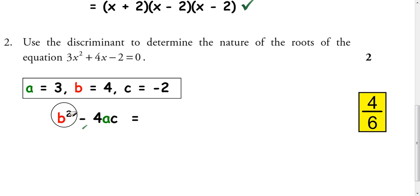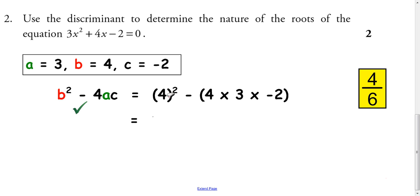So if we do b squared minus 4ac, using that you get a mark. Sub in the 4 to b, so you're going to have 4 squared, take away, and then 4 times 3 times negative 2. Put that in brackets, and then work this out. So 16, take away, 12 times negative 2, that's negative 24. So take away negative 24, that becomes plus, subtraction of negative, and you get 40.